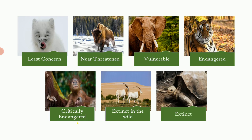The next category is 'critically endangered,' abbreviated as CR. Shown here is the orangutan. Another example is the beluga sturgeon, which is harvested for its caviar. Critically endangered species have an extremely high risk of extinction in the wild. To quickly review: vulnerable means high risk, endangered means very high risk, and critically endangered means extremely high risk of extinction.